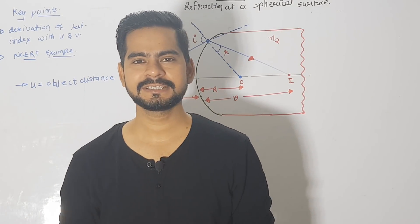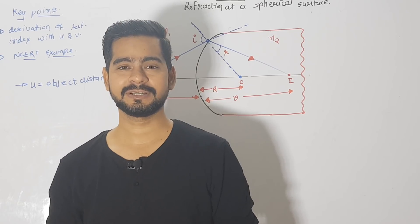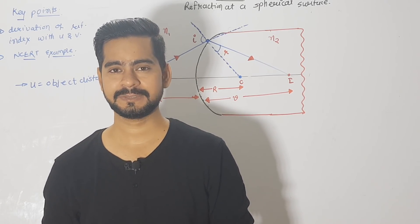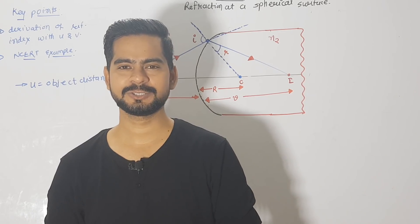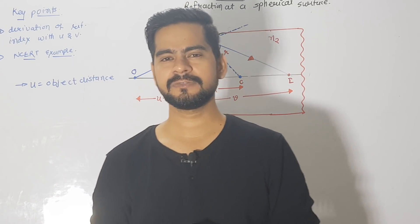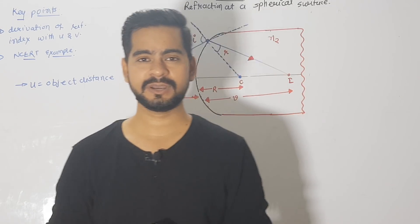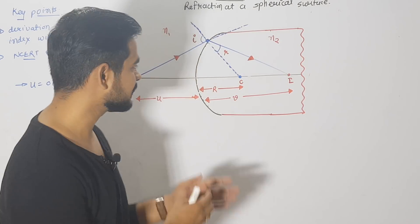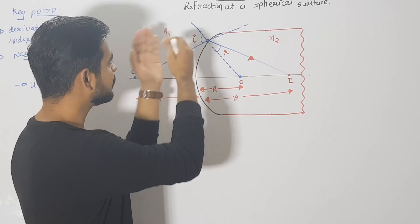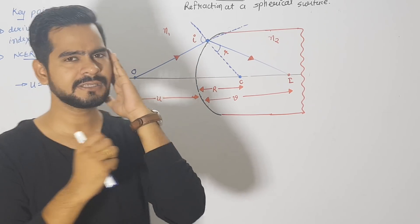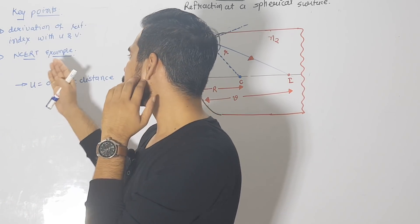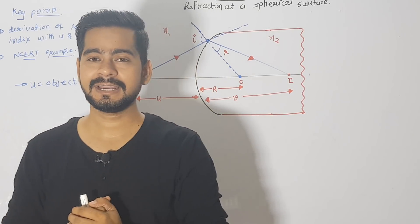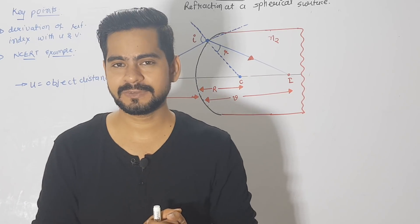Hello everyone, welcome to the class of Sachin Sir Physics, the finest and the easiest way to learn the concept. I'm back with a new video and in this video we're going to talk about a new point from the chapter Ray Optics and Optical Instruments. In this class we will derive a very important relation of refractive index with the object distance u as well as the image distance — refraction at a spherical surface — and we will also focus on a very good example based on this topic. So be ready to fall in love with physics.